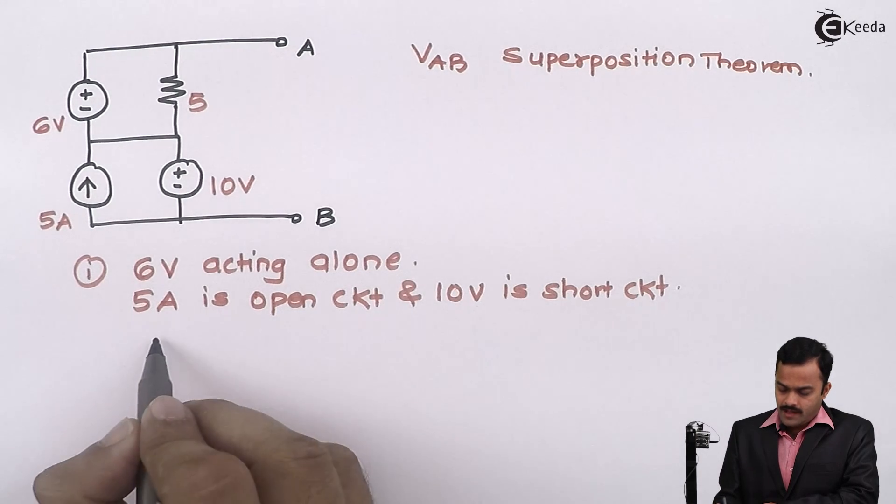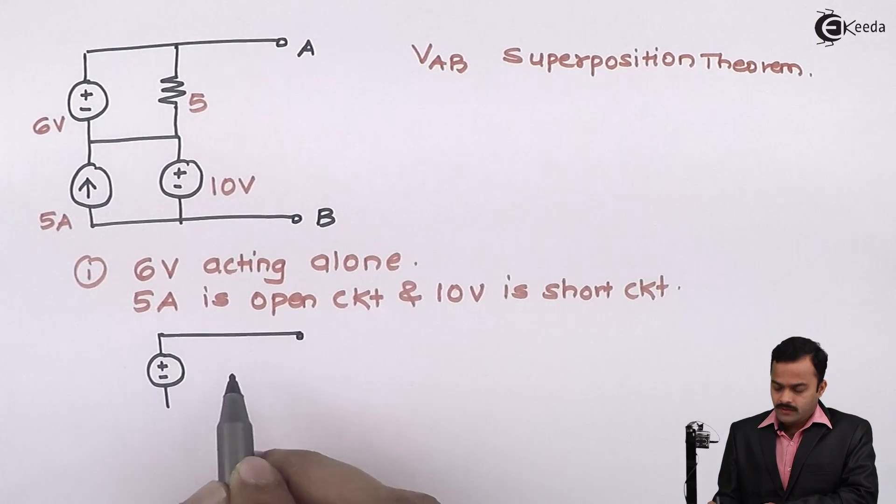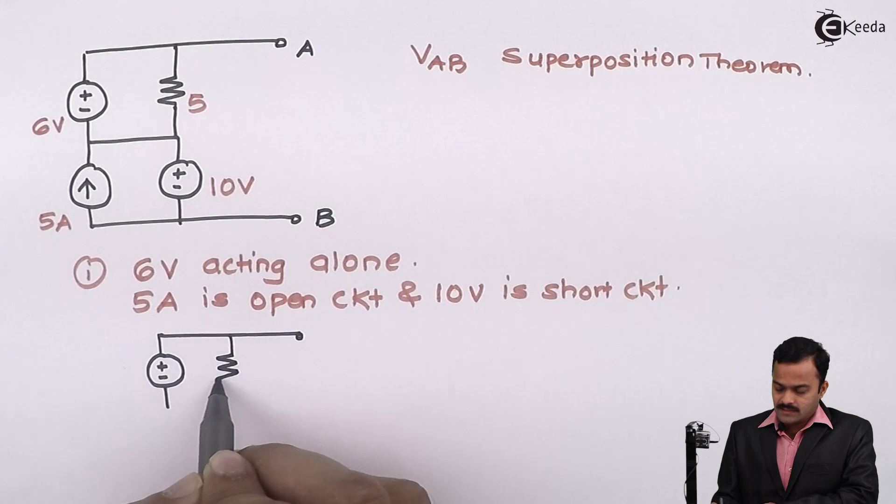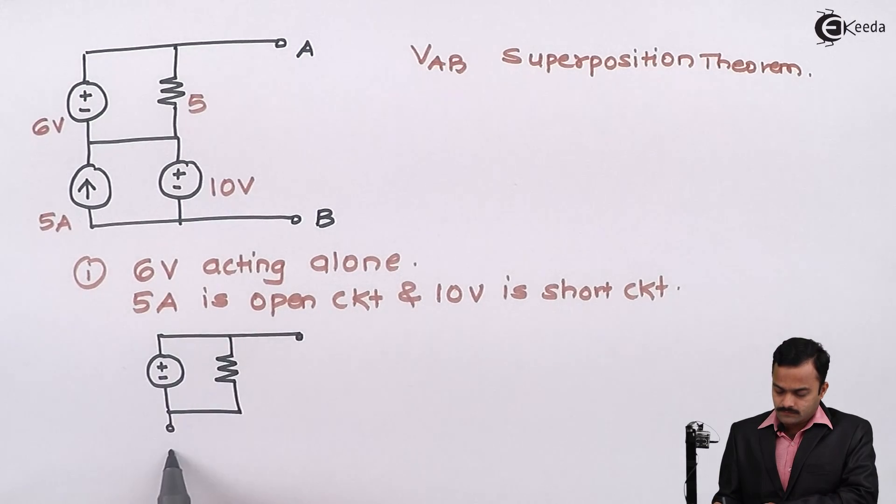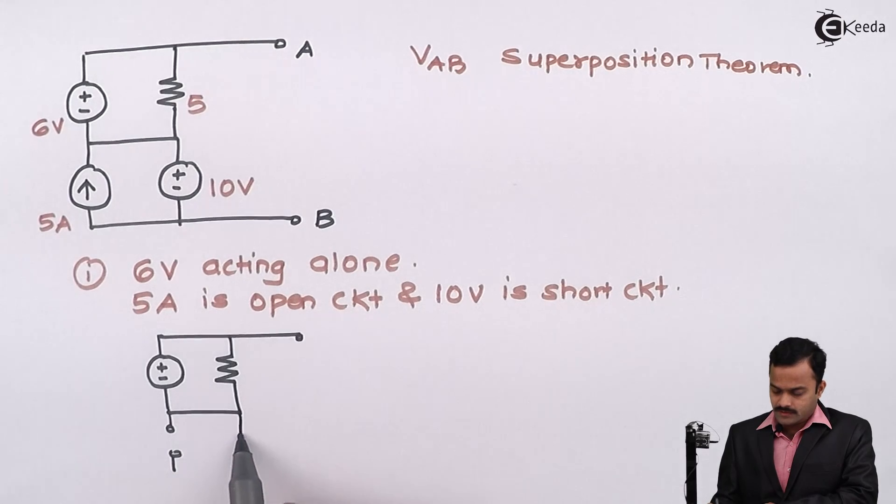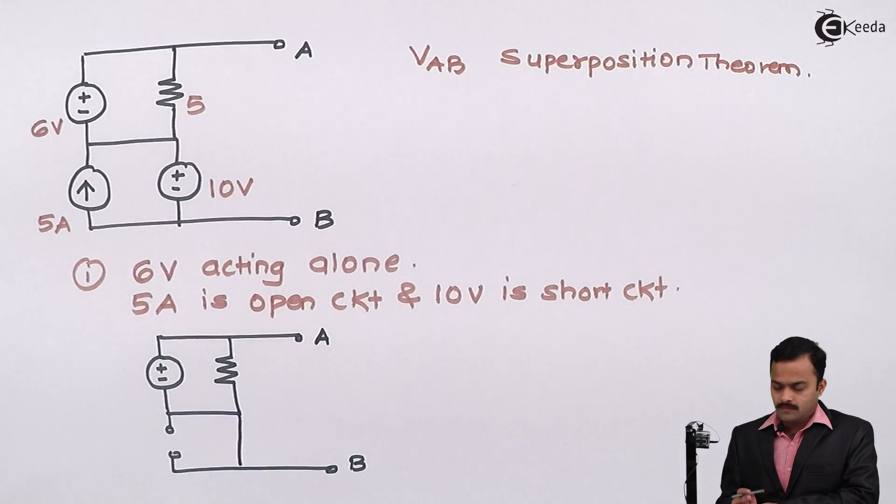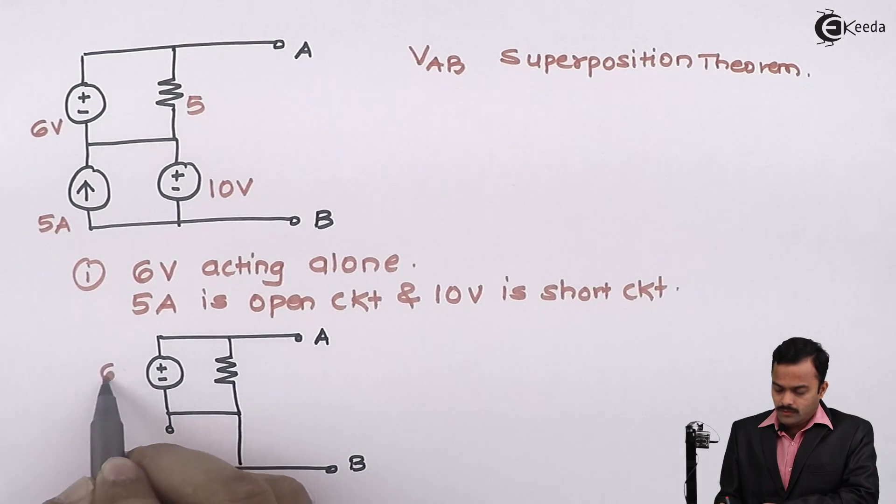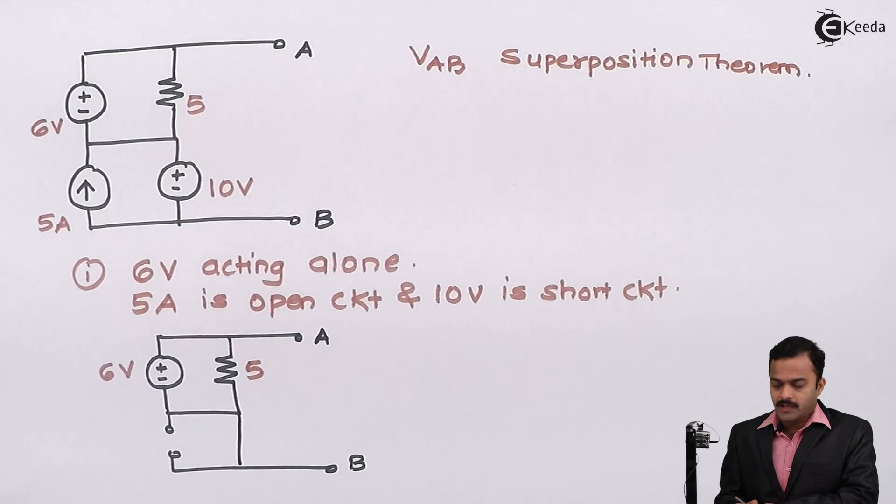So I will have 6V acting alone, so this will be present. Remember, we are not touching resistance at all, so that will also remain as it is. Current source is open circuit and voltage source is short circuited. So I will get a circuit having only source 6V present and a resistance 5 ohms.